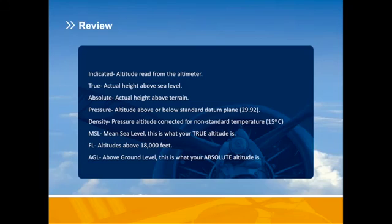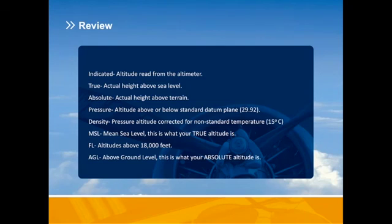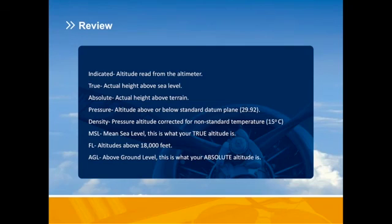Our most commonly used altitude while flying is indicated, read directly from your altimeter — we just need to ensure the proper pressure setting. True altitude is the height above sea level. Absolute altitude is the height above terrain. Pressure altitude is the height above or below the standard datum plane, where standard is 29.92. Density altitude is pressure altitude corrected for non-standard temperature, which is 15 degrees Celsius. MSL or mean sea level is your true altitude. Flight levels are altitudes above 18,000 feet, and AGL is above ground level, which is your absolute altitude.